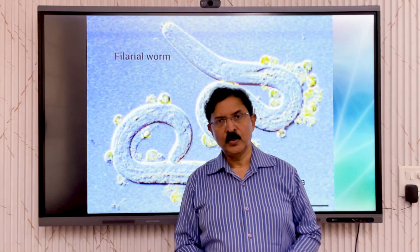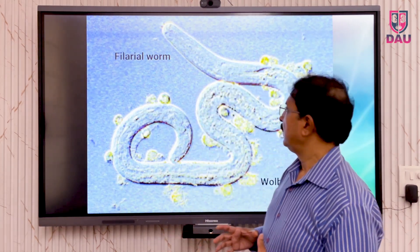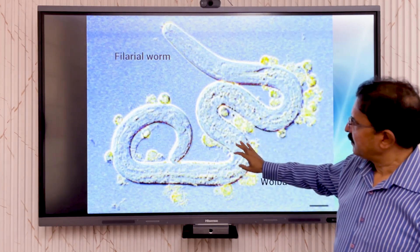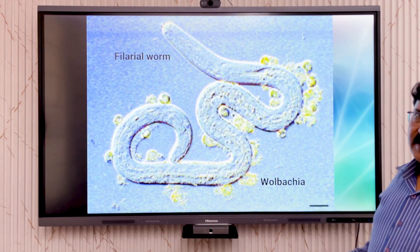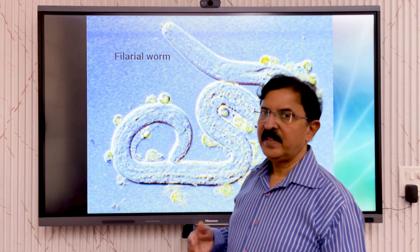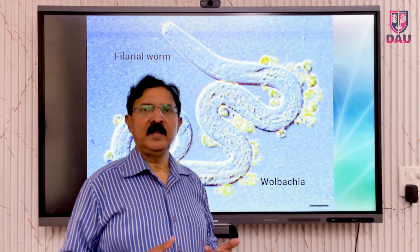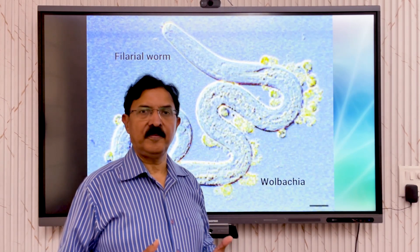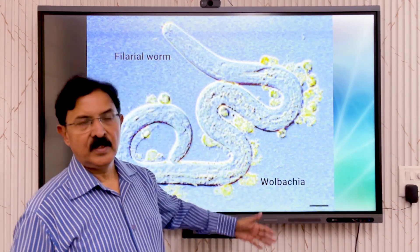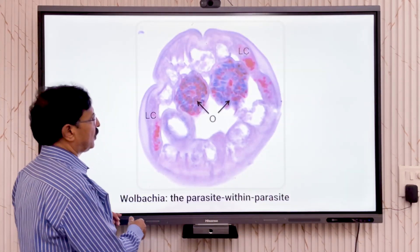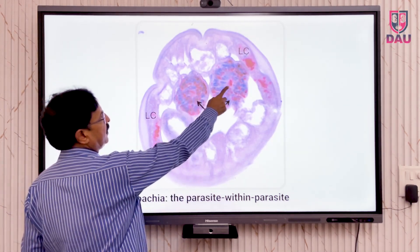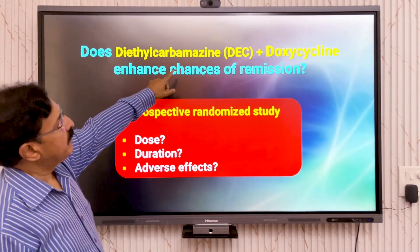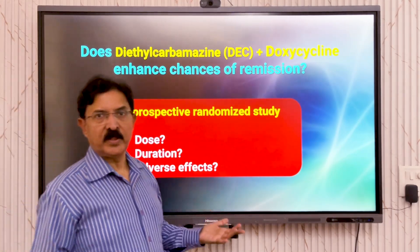When treating filariasis with anti-filarial drugs, you should know that inside the filarial worm there is an endoparasite called Wolbachia. It is now believed that the lymphangitis and allergic responses seen with filarial infection are driven less by the antigen of the filarial worm itself and more by the antigen of Wolbachia. So today we treat both: we give patients diethylcarbamazine as well as doxycycline to treat an acute attack of filariasis.